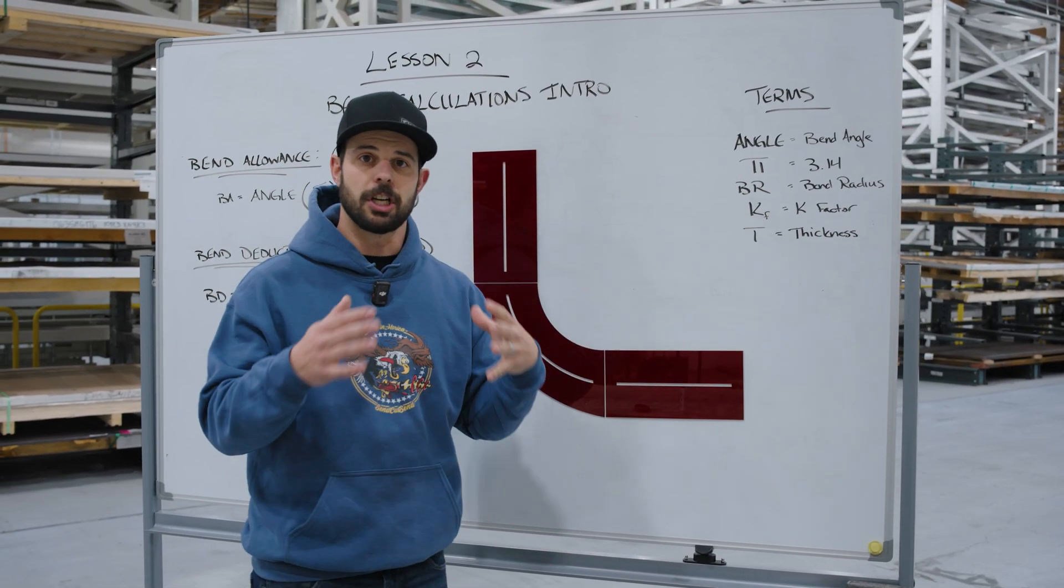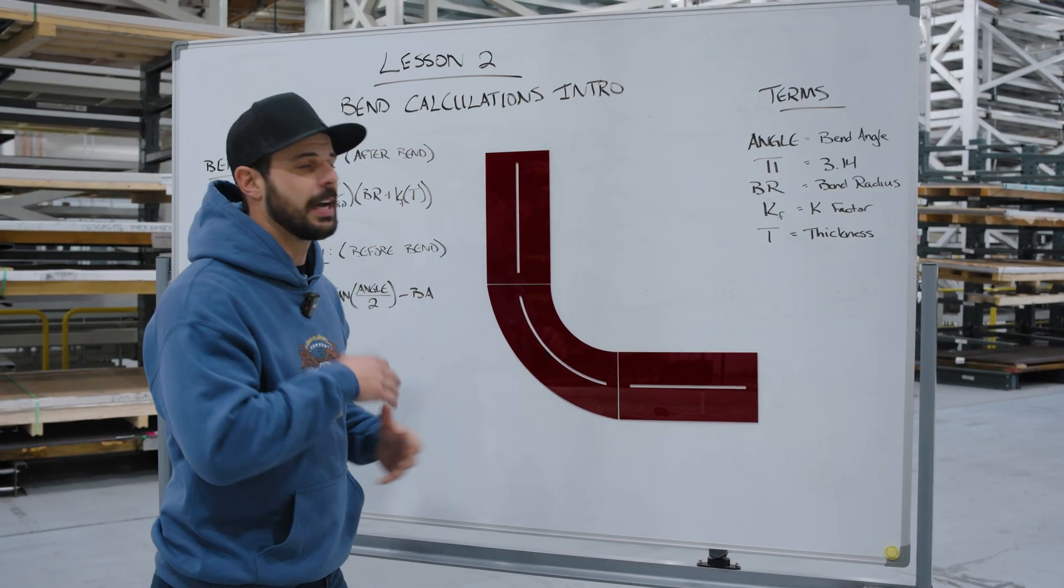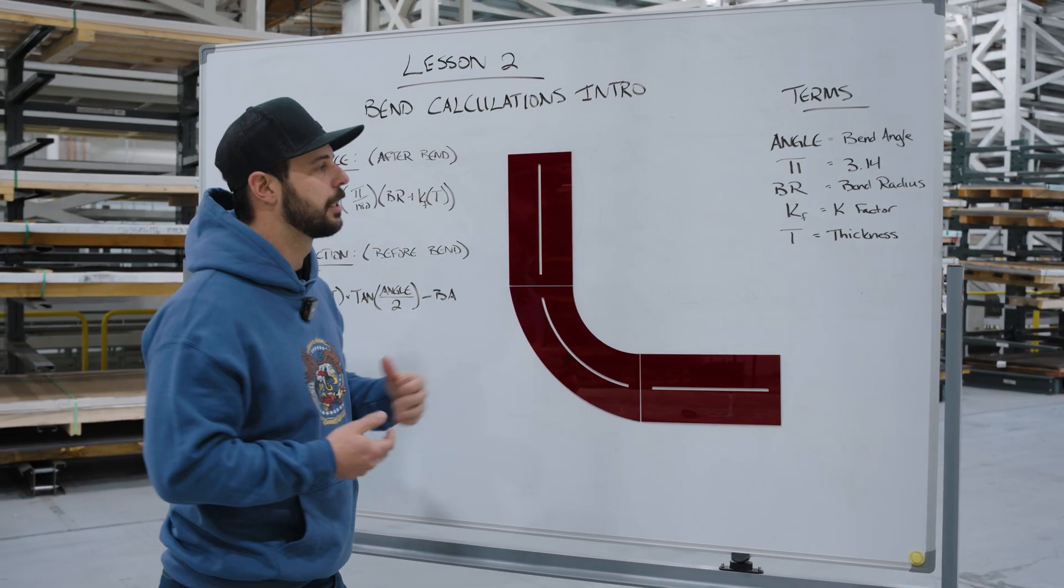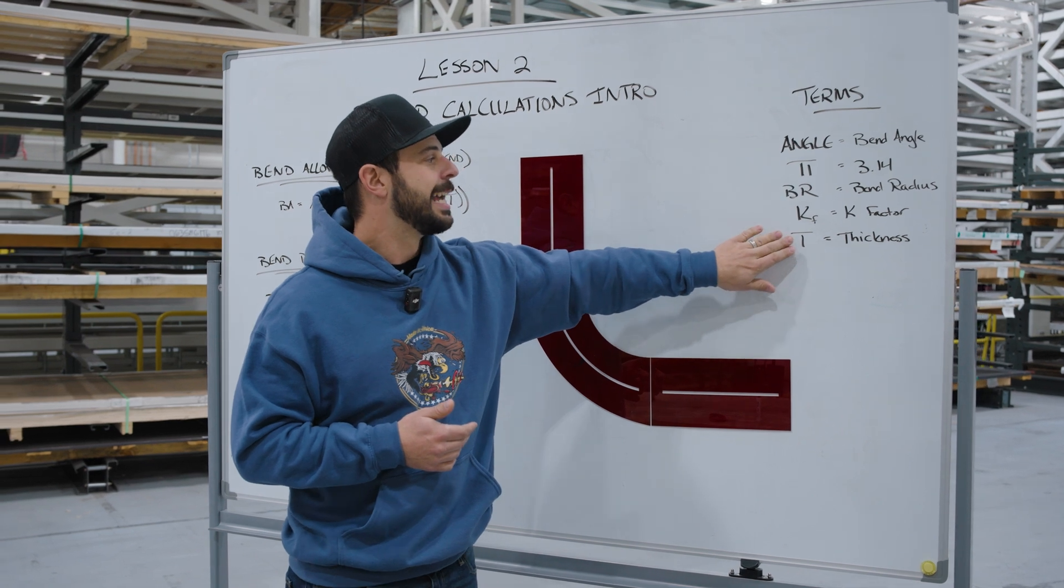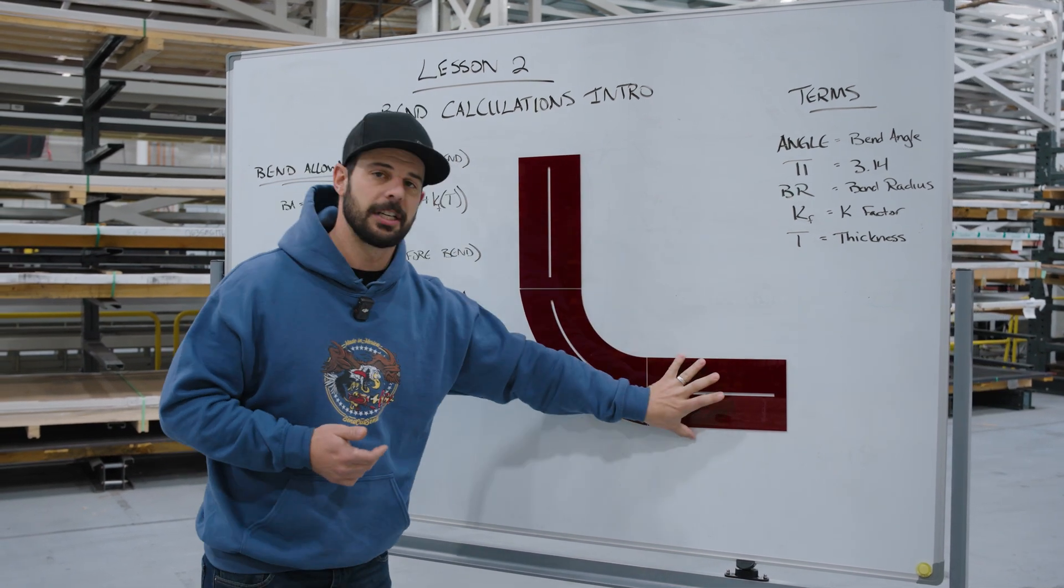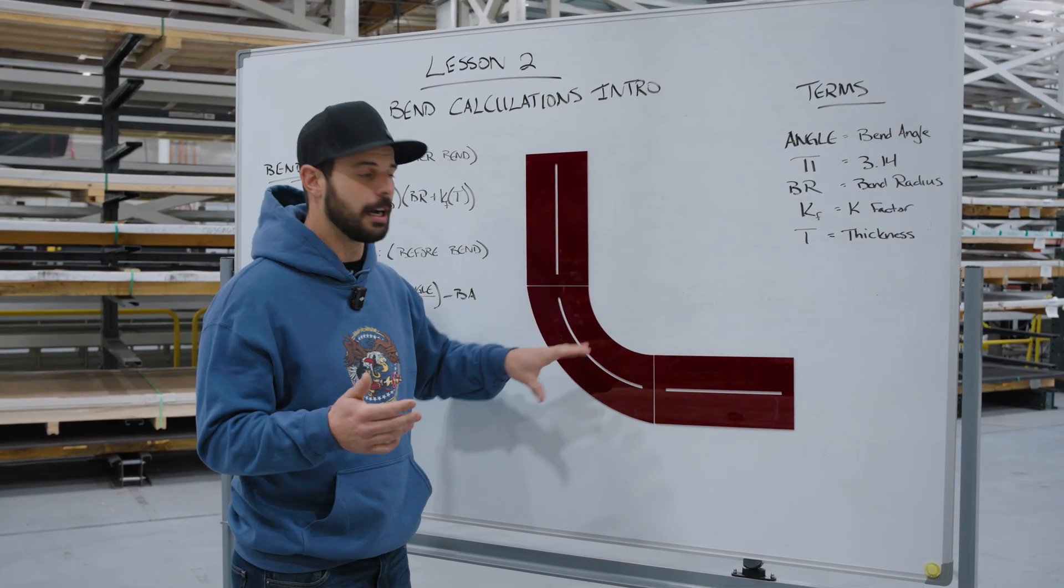We have k-factor, which is a constant. If you don't know k-factor, it's on our website in our material guidelines. That's what we're going to use as our k-factor terms. Thickness is just the material thickness on the unbent area.